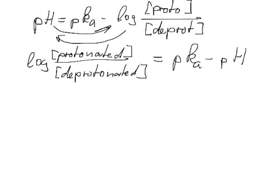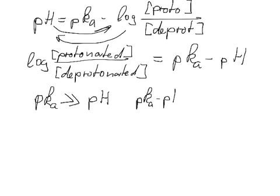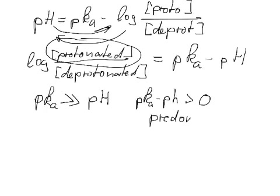And what we can do now is we can say we have basically three different scenarios. We can say, okay, what happens if the pKa is considerably larger, by a factor of 10 say, or by one unit, considerably larger than the pH? Then obviously pKa minus pH is larger than zero, and therefore it is predominantly in the protonated form.